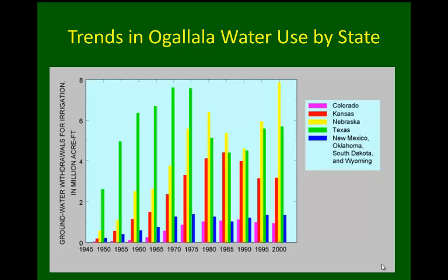The other regions combined — New Mexico, Oklahoma, South Dakota, and Wyoming — started low, picked up, and tended to be fairly steady from 1970 to about 2000.